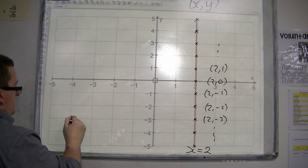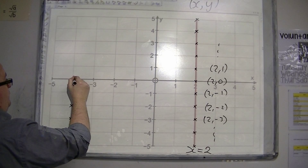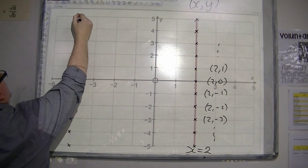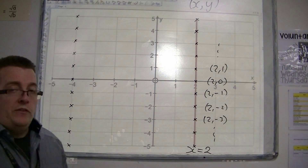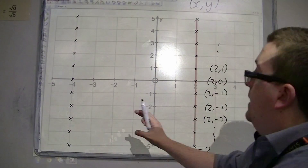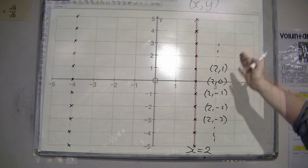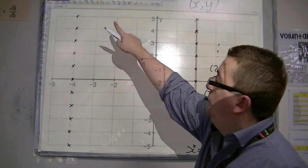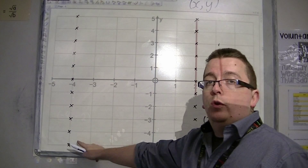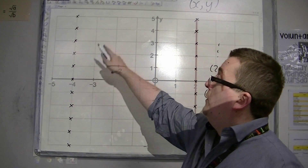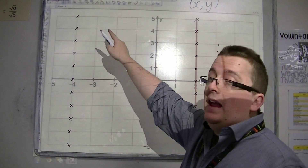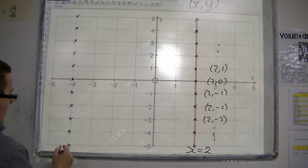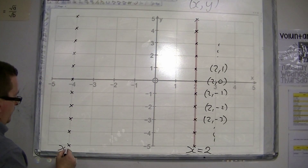If I then look at some other points, it doesn't take much thinking — if that was x equals 2, then all of these points also have the same x coordinate. And that x coordinate is minus 4, so that must be the line x equals minus 4.